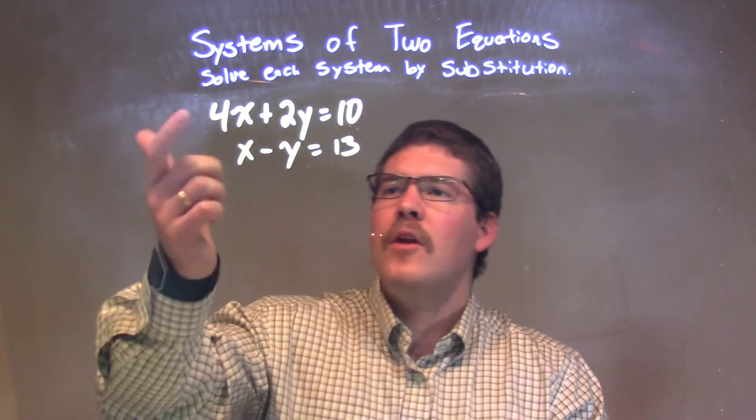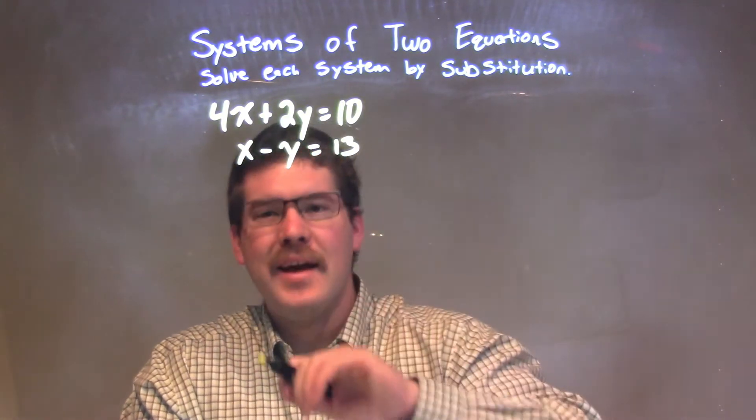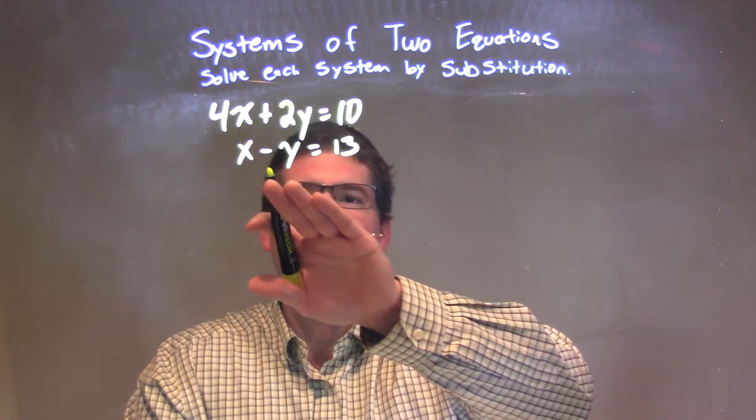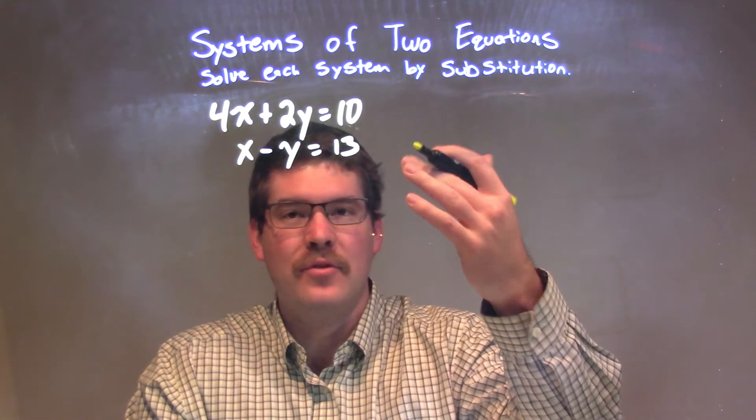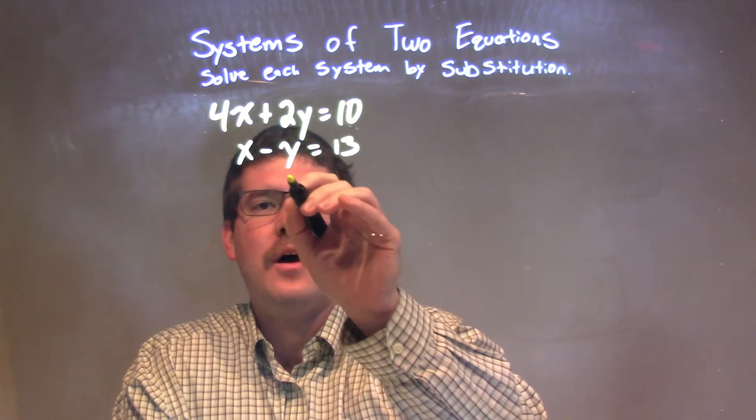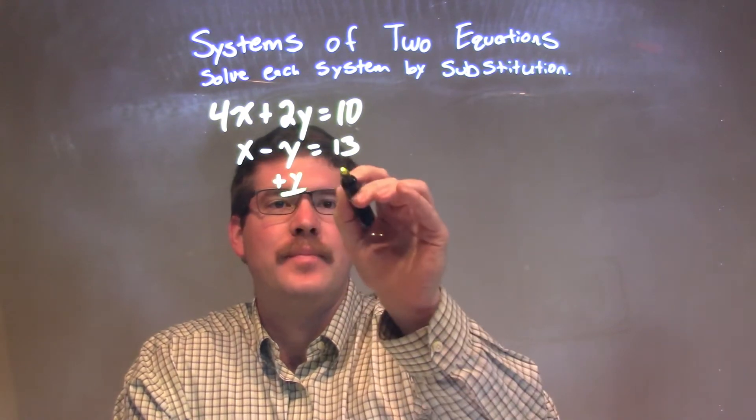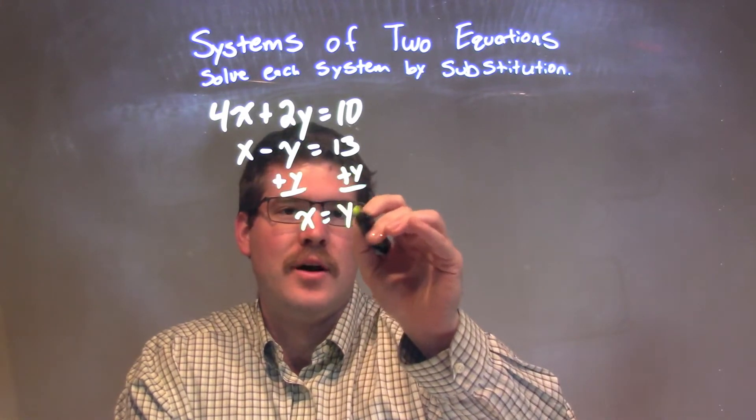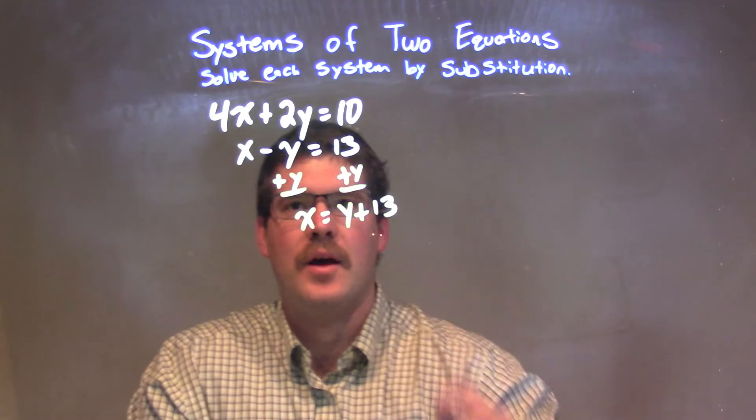Well, not one of my variables is already isolated, but I know on the second equation I can get x by itself very quickly. I just have to add y to both sides, so I'm going to do that. I'm going to rewrite the second equation by adding y to both sides, and x equals 13 plus y, which is y plus 13. Pretty simple.